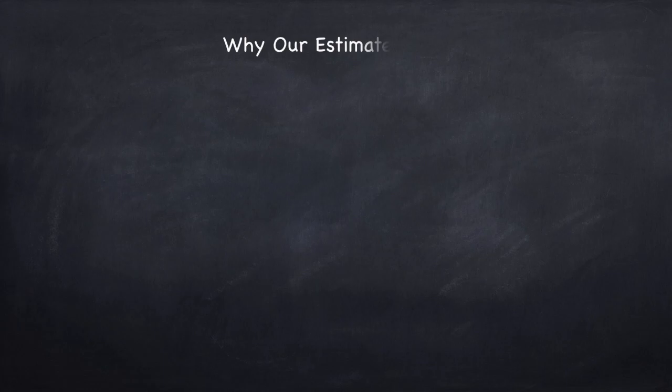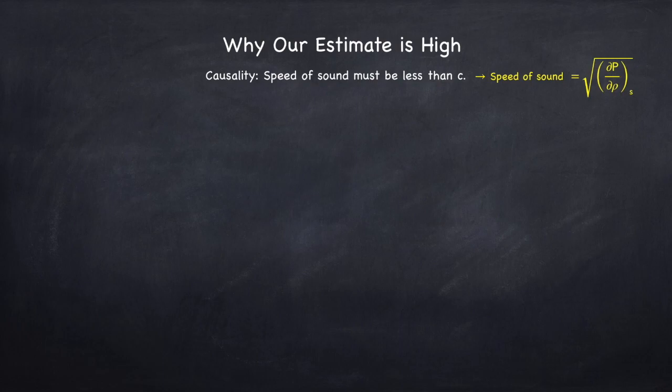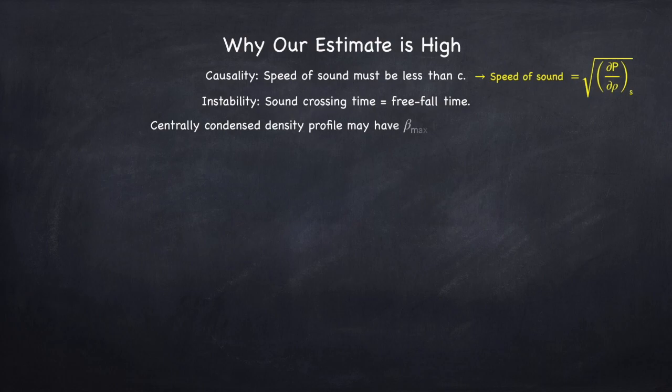Now let's take a look at a few things that we haven't considered that would improve this estimate. One thing we haven't considered is causality. The speed of sound in the material has to be less than the speed of light. If you assume a relativistic gas with the model we've been using, that'll bring down the maximum mass to just over three solar masses. Another thing we haven't considered is there's other things that might cause instability. If you recall from the first video in this series, Stellar Physics 1a, a self-gravitating object will go unstable when the sound crossing time is approximately equal to the freefall time.